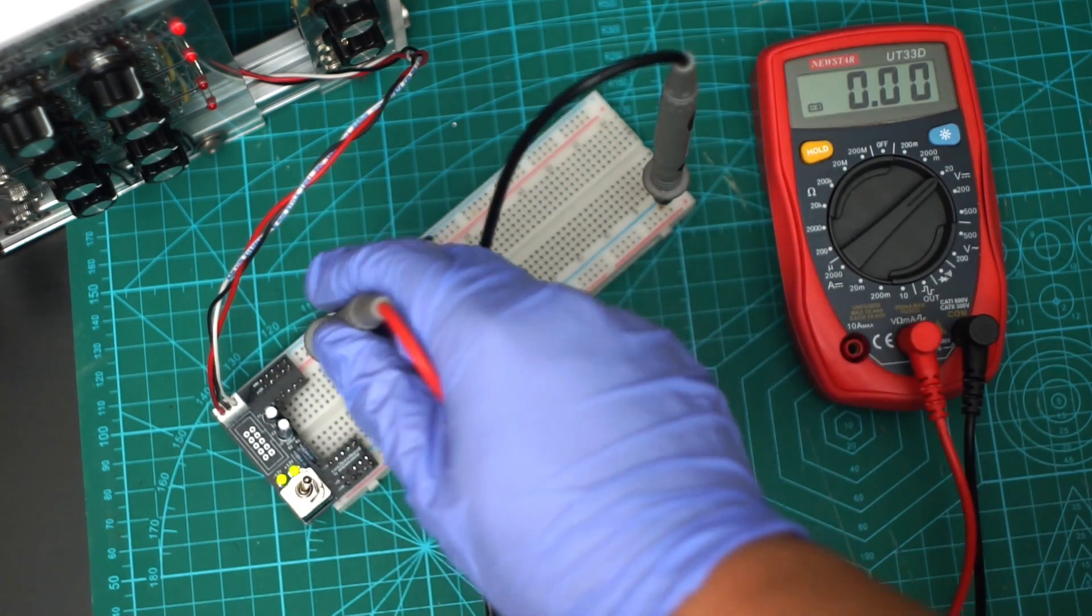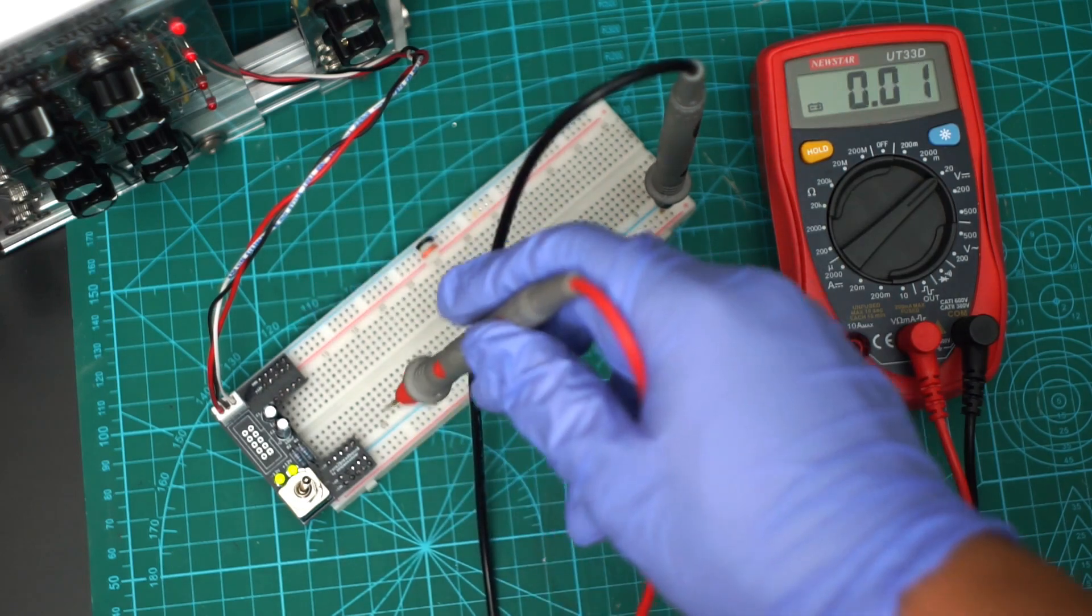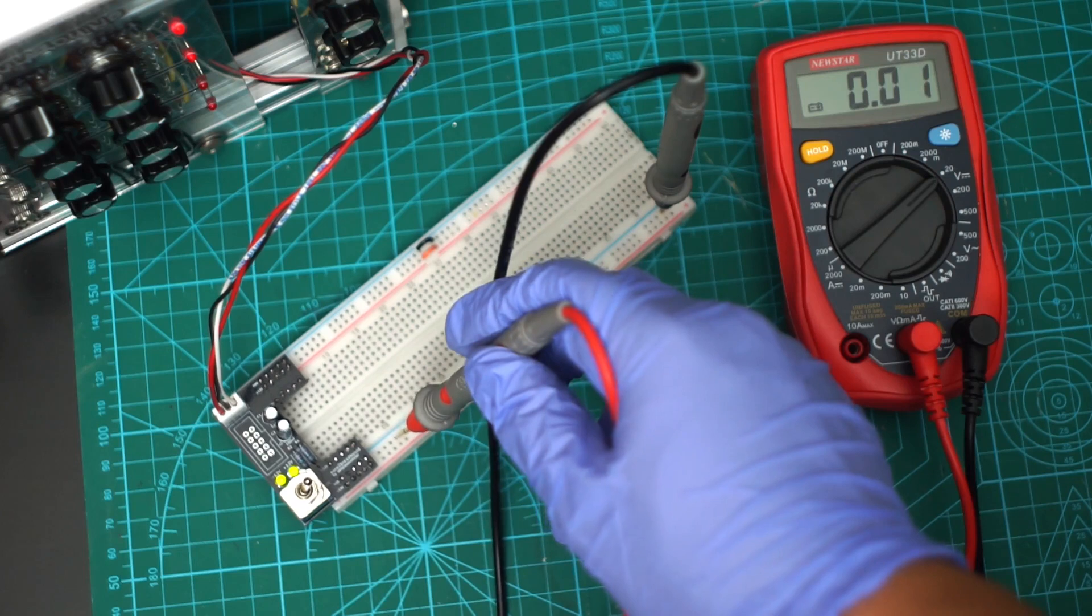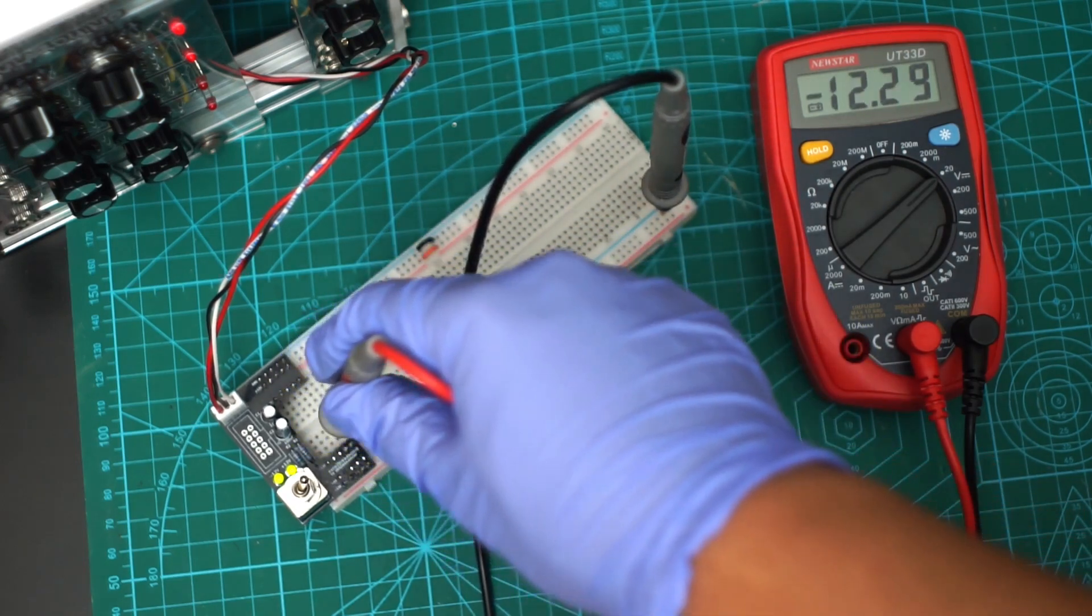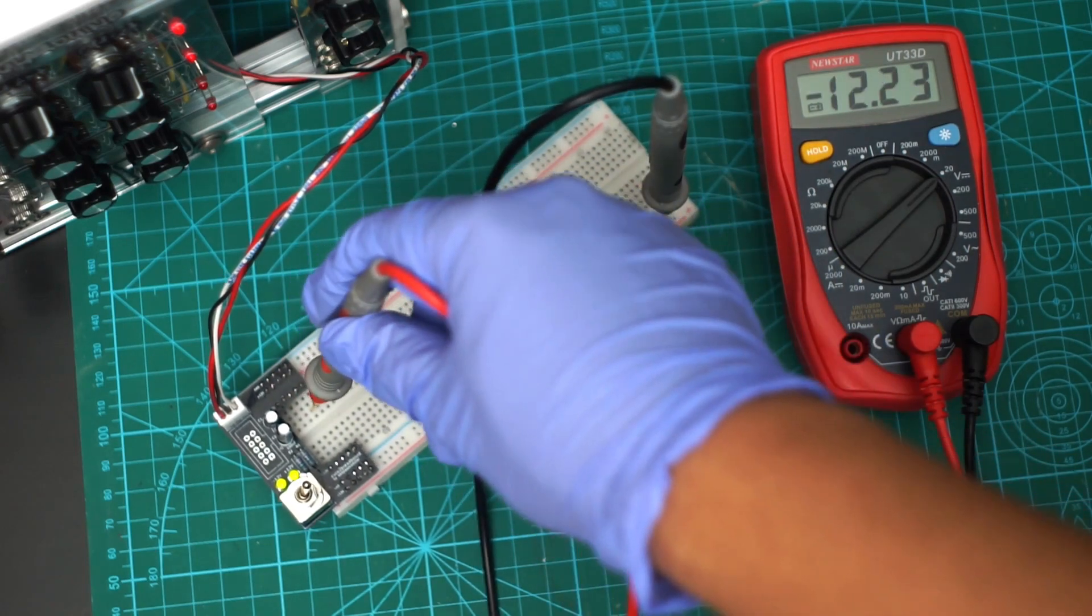Both red rails should be connected to positive 12 volts, while the blue pins in this middle section should be connected to negative 12.